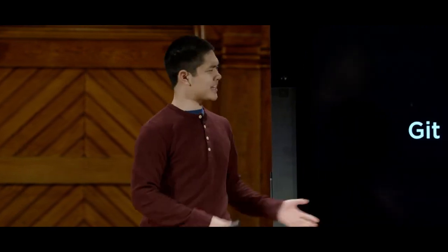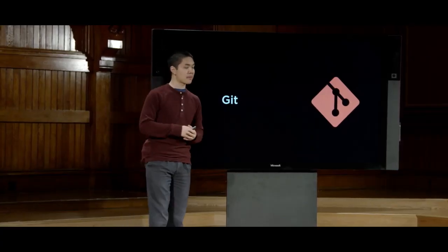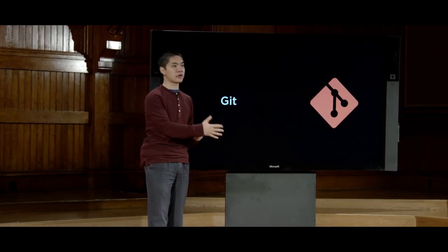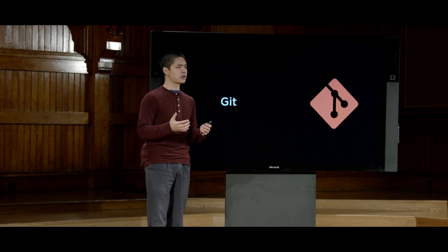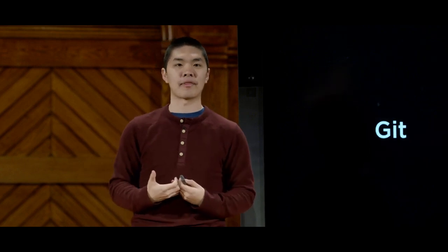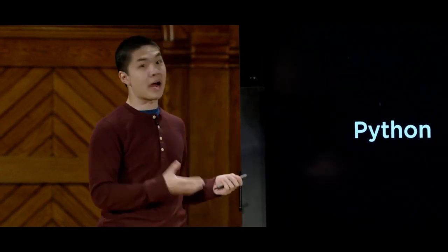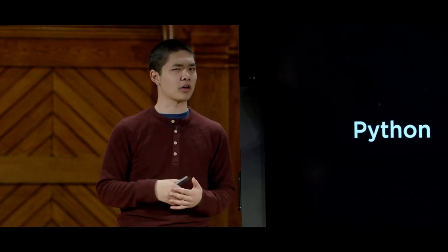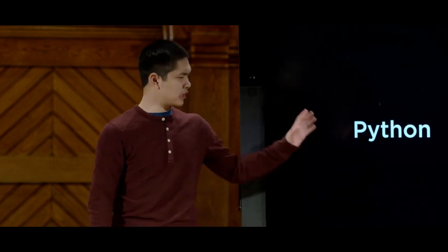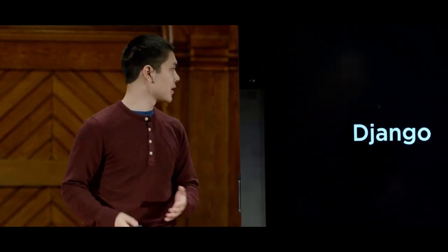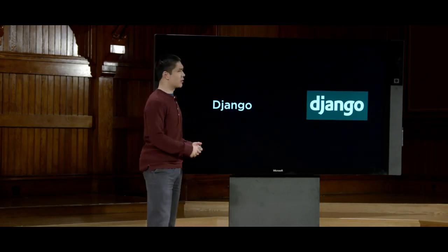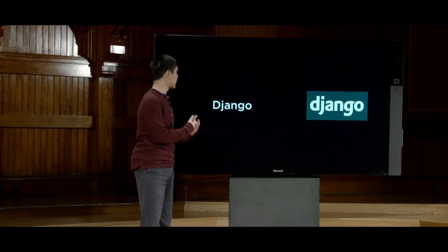After that, we'll turn our attention to Git, a tool we can use to version control our programs, keep track of changes we make, and allow us to work on various different parts of the web application at the same time before merging those pieces back together. After that, we'll look at Python, one of the first main languages we're going to explore, which we'll use to build our web applications — specifically using a framework called Django.